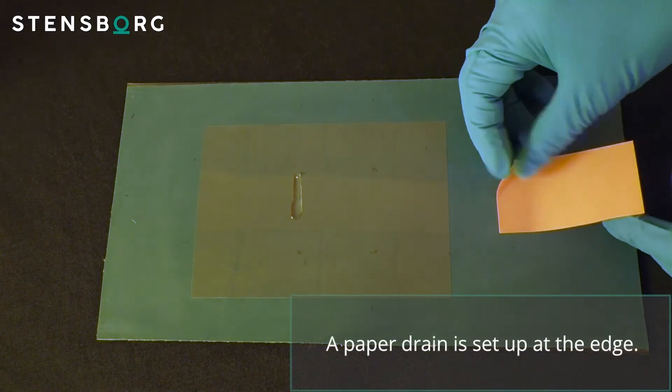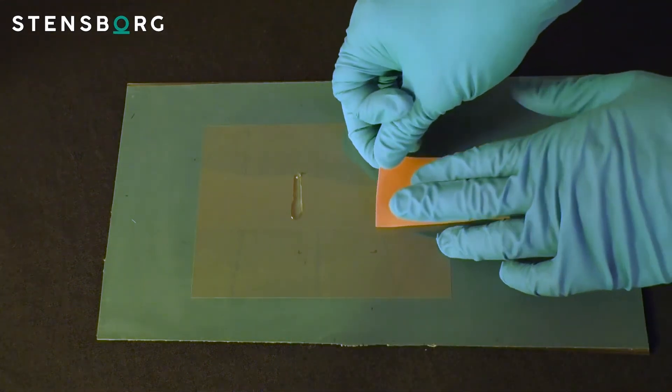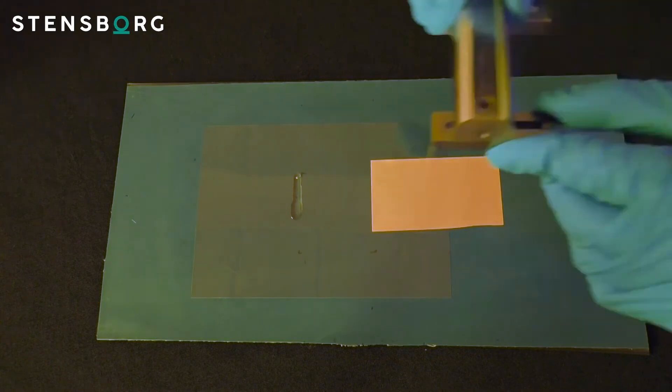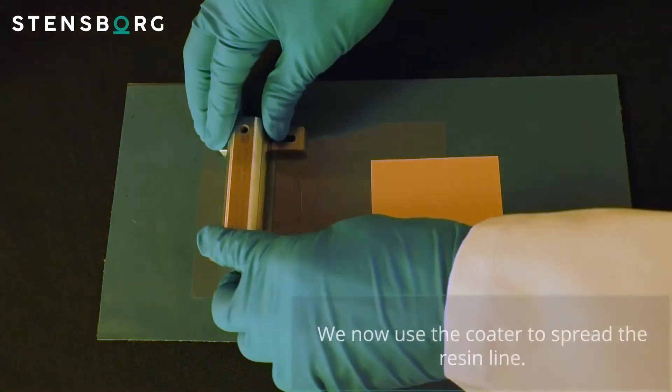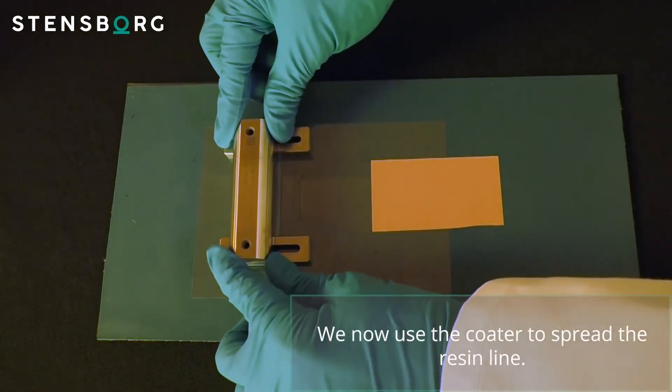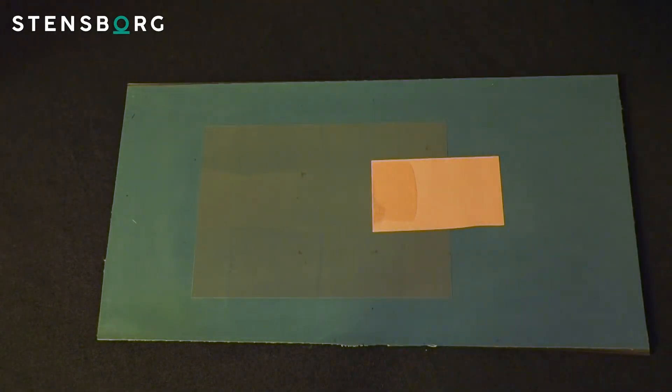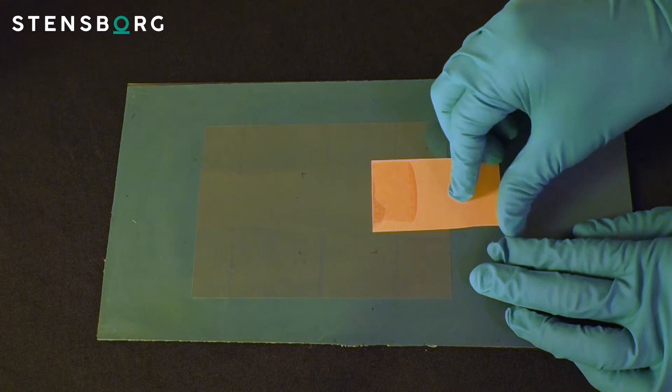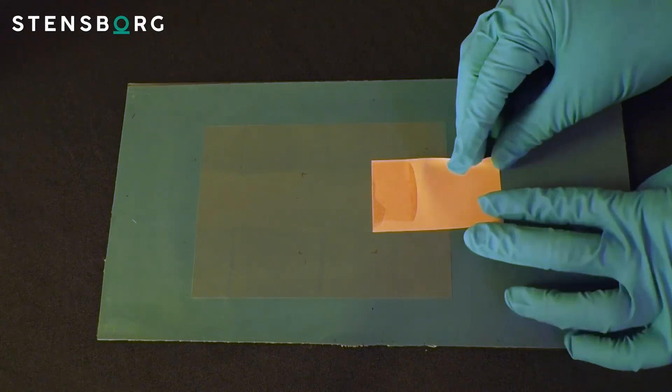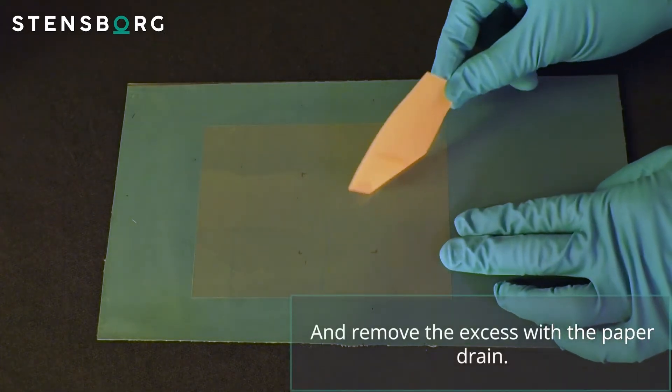A paper drain is set up at the edge. We now use the coater to spread the resin line and remove the excess with the paper drain.